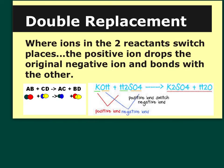The next type is double replacement, or double displacement. In this case you've got two things switching places — that's why it's called double replacement. Going back to our ABCD model: you have elements A and B bonded together, and C and D bonded together, and you have a double replacement where two reactants switch places.